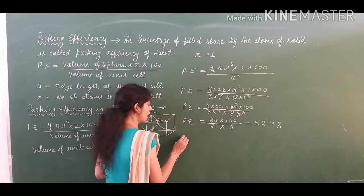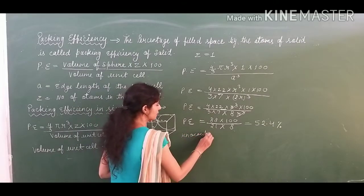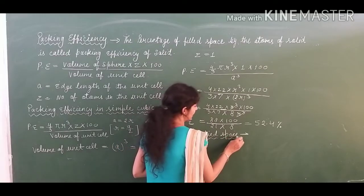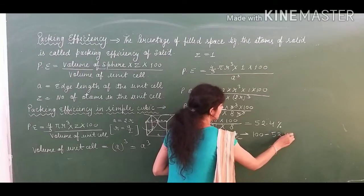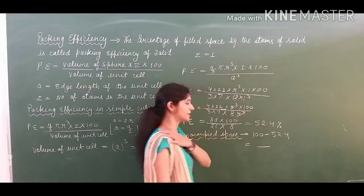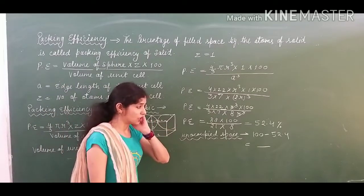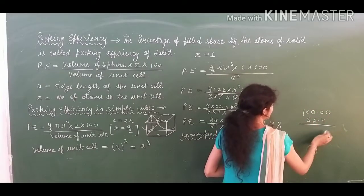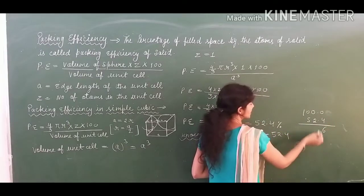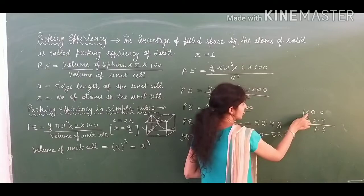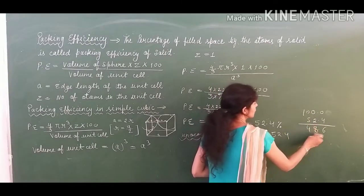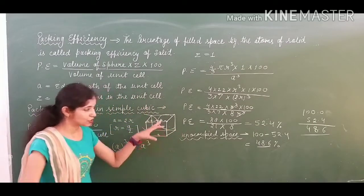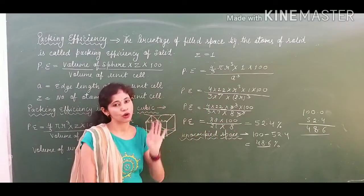Now, the percentage of unoccupied space is found by: 100 minus 52.4. Subtracting gives 47.6%. So 47.6% is the percentage of unoccupied space, and 52.4% is the percentage of occupied space in simple cubic.